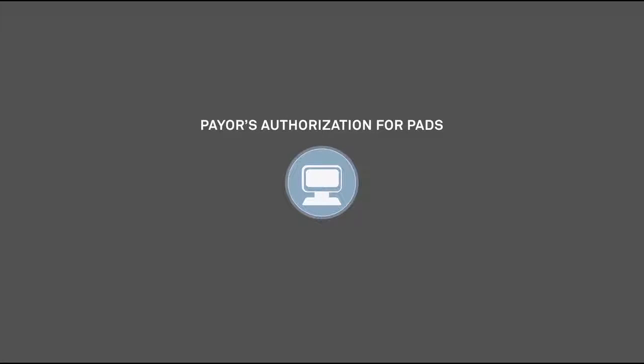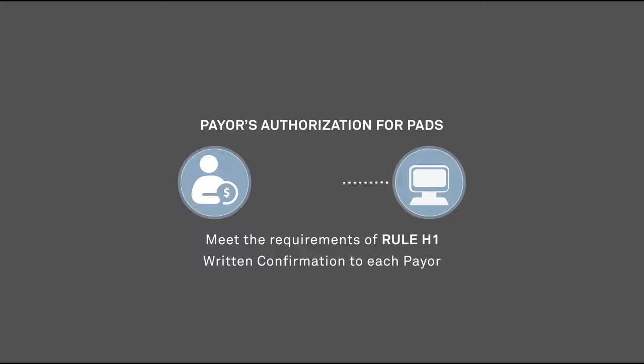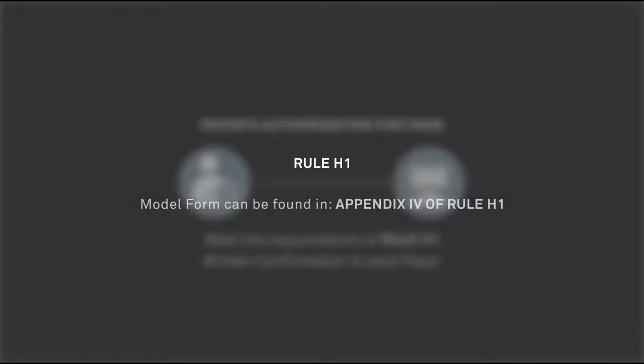In addition, if foreign payees intend to obtain a payor's authorization for PADs through an electronic process, they must ensure that this process is consistent with the requirements of Rule H-1, and they must send a written confirmation to each payor in advance, in accordance with the requirements set out in Rule H-1. A model form setting out the mandatory requirements of the written confirmation is provided in Appendix 4 of Rule H-1.